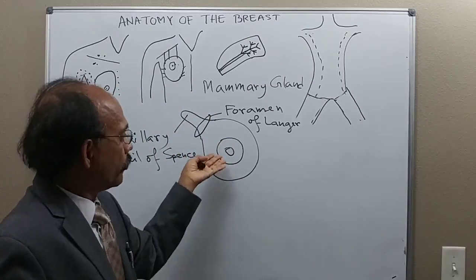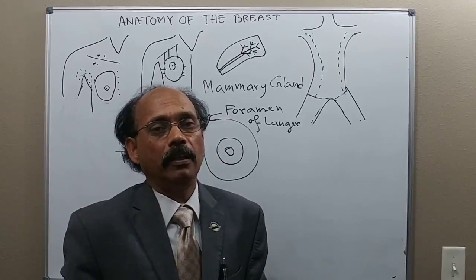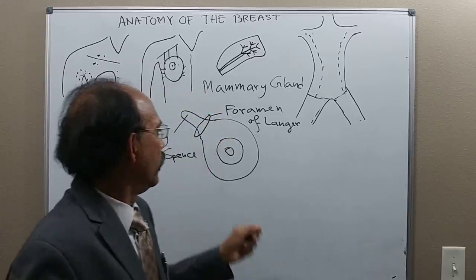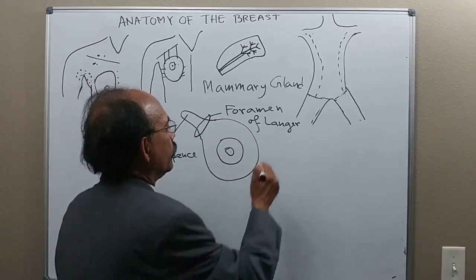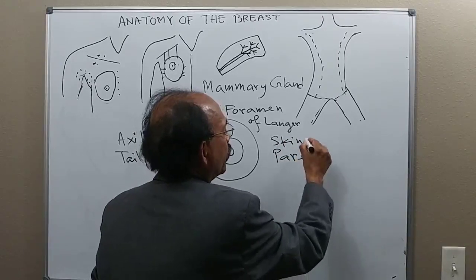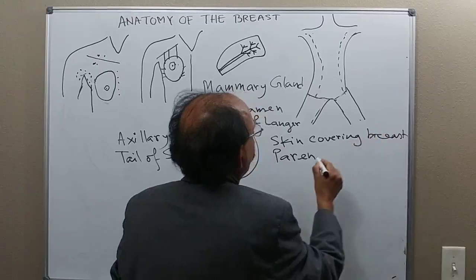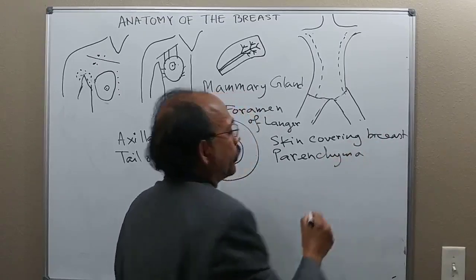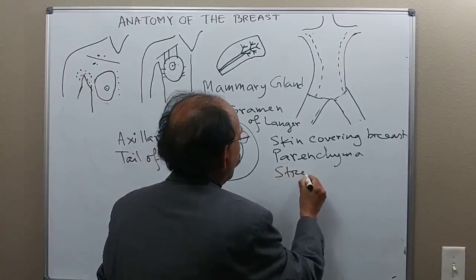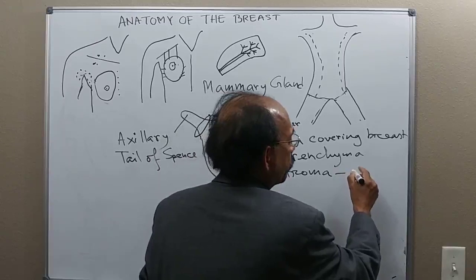The breast, in both male and female, is a modified sweat gland. Like other glands, it has two parts: the stroma and the parenchyma, and it is covered by the skin. The parenchyma is the part which produces milk. The stroma is composed of connective tissue supported by plenty of fat — connective tissue plus adipose tissue.